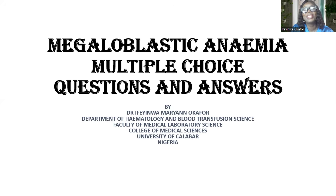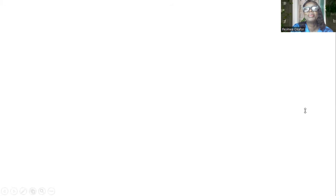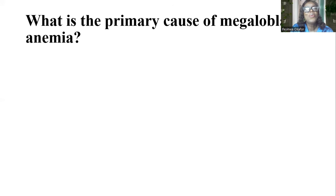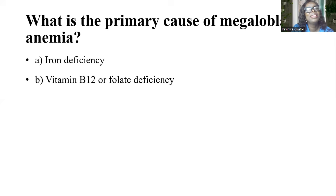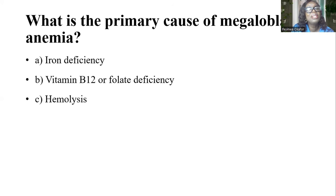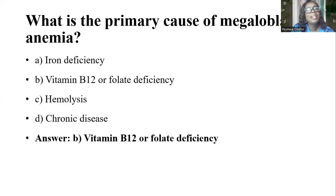Our first question: What is the primary cause of megaloblastic anemia? A, iron deficiency. B, vitamin B12 and folate deficiency. C, hemolysis. D, chronic disease. The answer is B, vitamin B12 and folate deficiency.